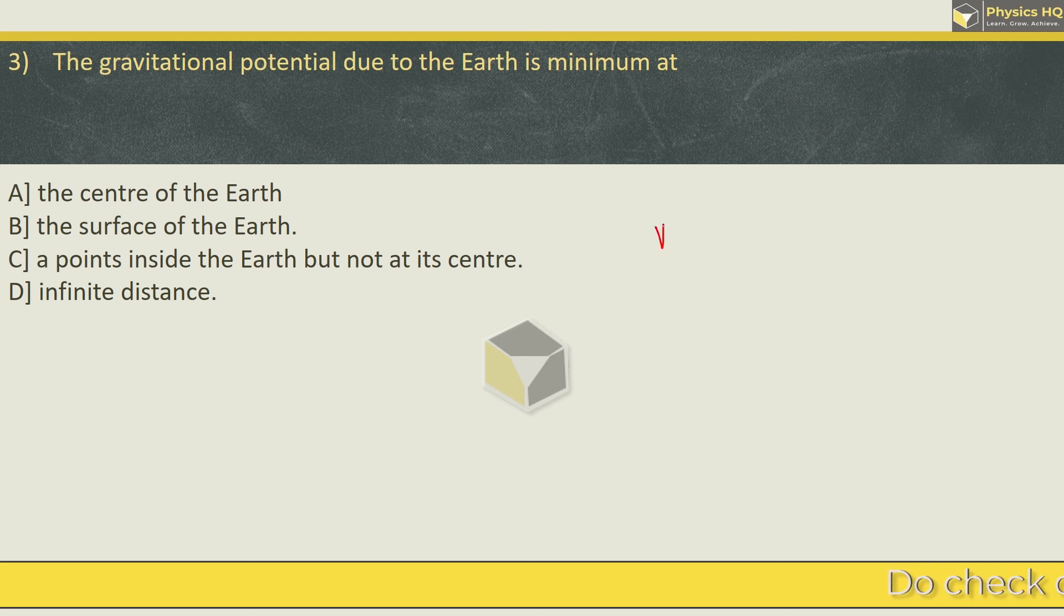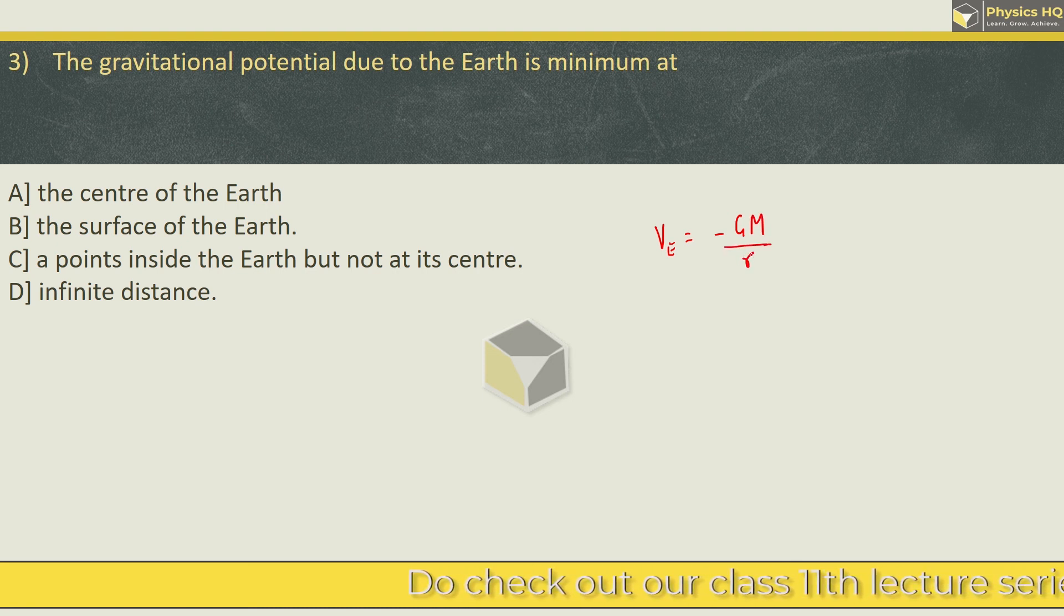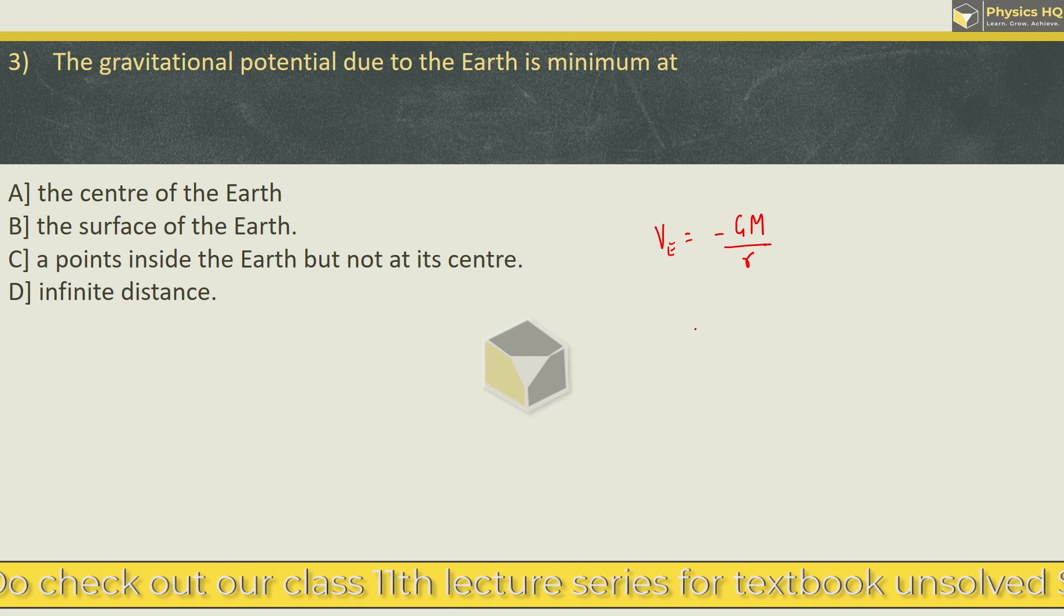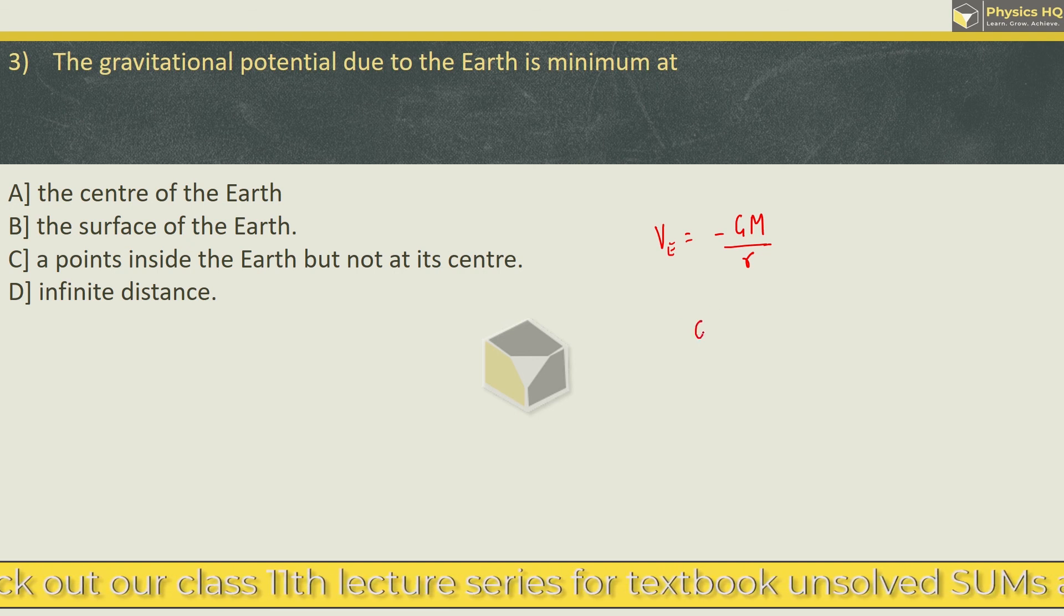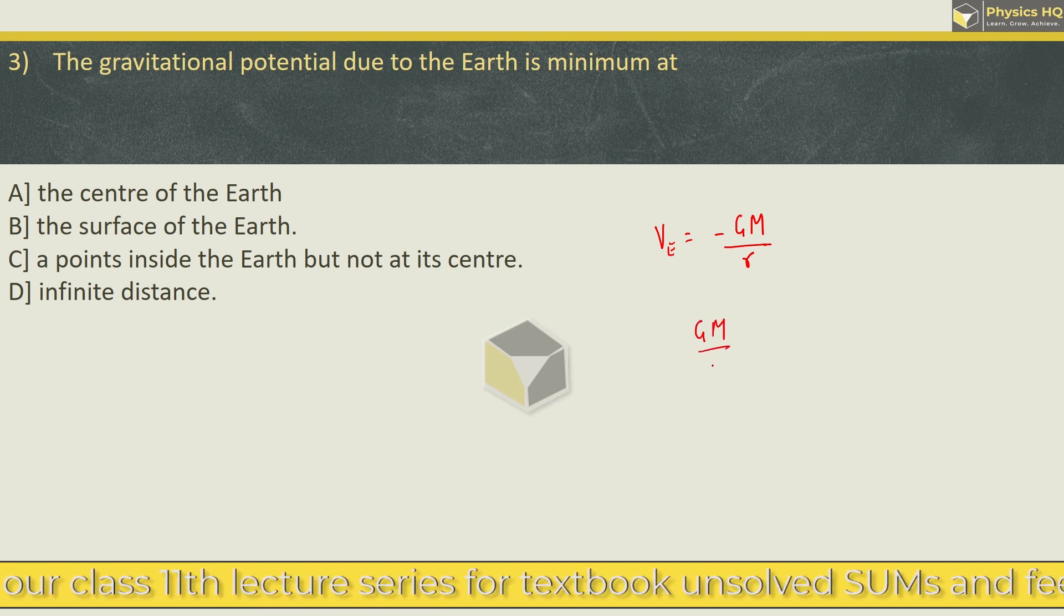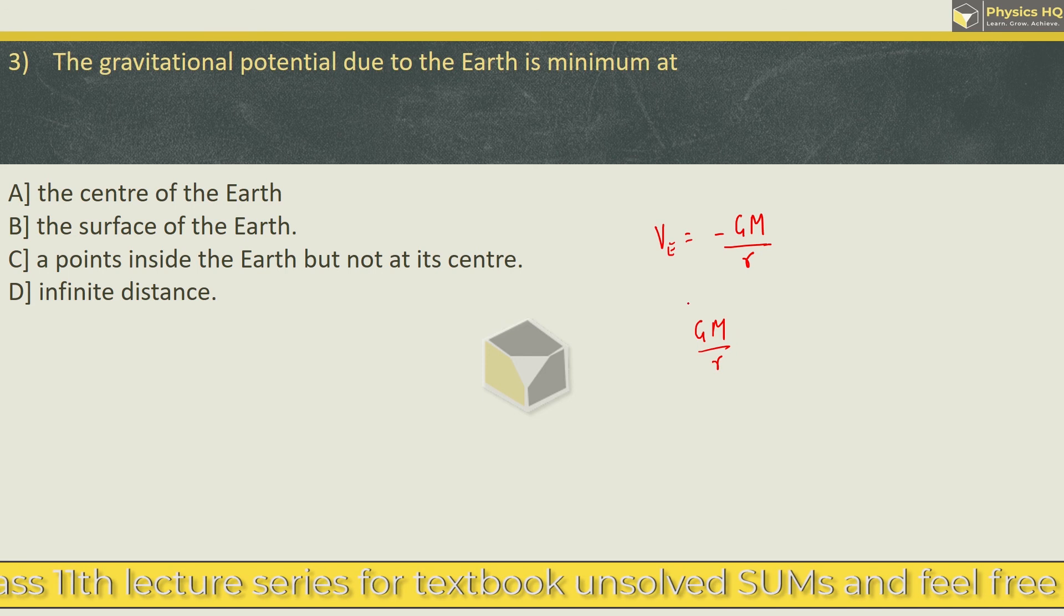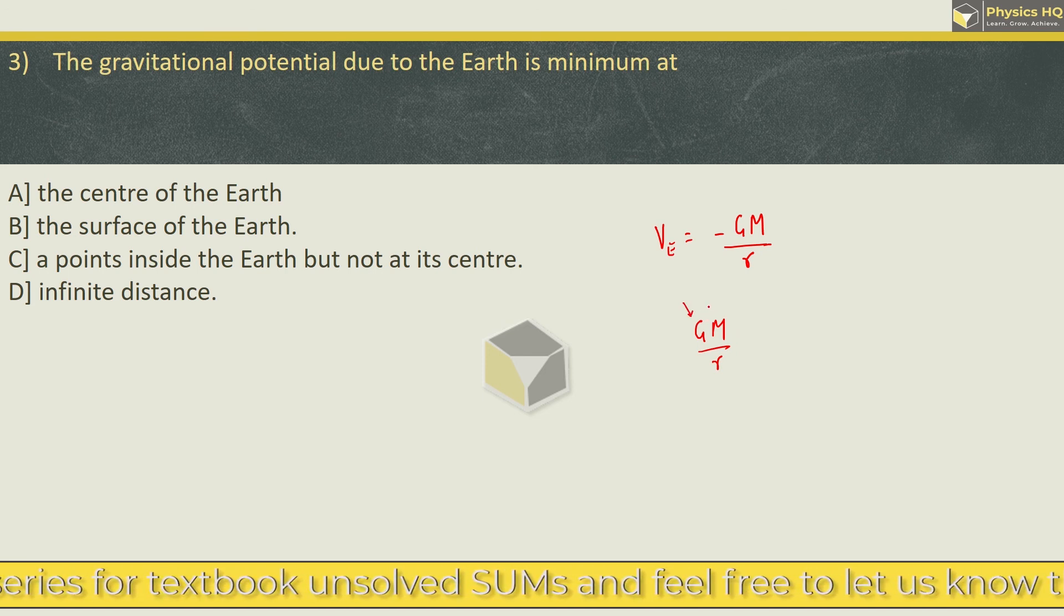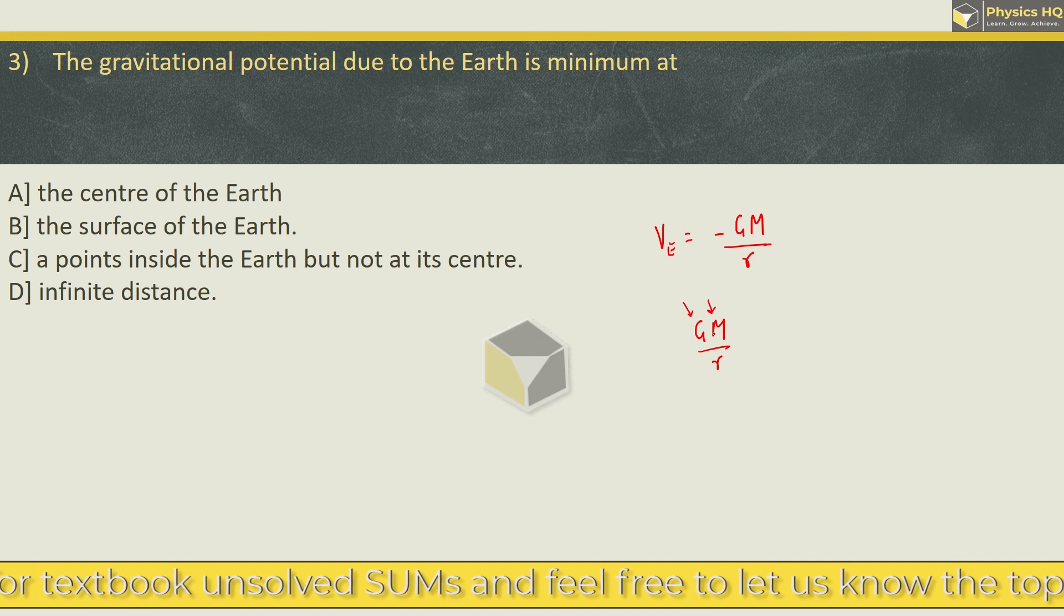Now gravitational potential due to Earth is given by minus of capital G into capital M mass of the Earth divided by the distance at which we are finding the potential. Now in this case, if we talk only about magnitude, potential relation is inversely proportional to the distance over here. Because G is gravitational constant which is constant at any point in the universe and M is mass of the Earth.